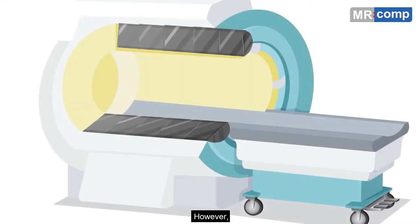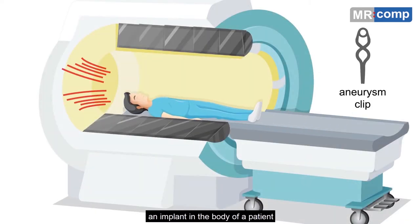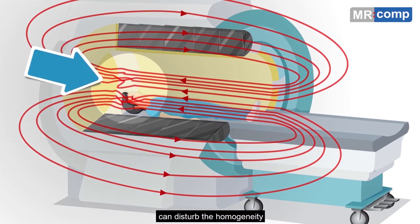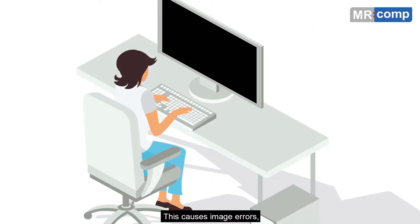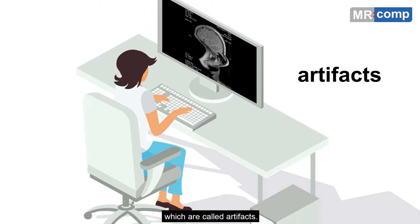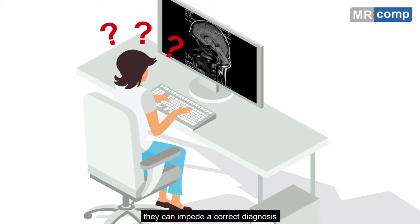However, an implant in the body of a patient can disturb the homogeneity of the static magnetic field. This causes image errors, which are called artefacts. If they occur, they can impede a correct diagnosis.